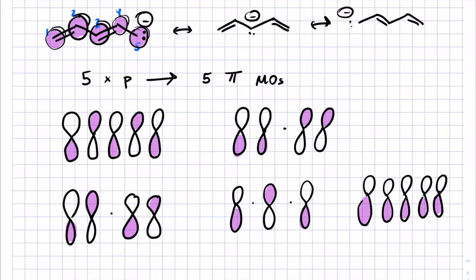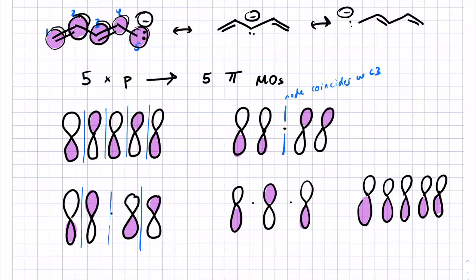What we're looking for are the vertical nodes encountered as we go from side to side. That one looks like it has four. The dots represent locations where a node coincides with one of the carbon atoms — in this case C3, where the wave function is zero. Similarly, there are also nodes in between atoms one and two and four and five. In this orbital, you've got two nodes: one coincides with C2, the other with C4. The last one doesn't have any vertical nodes. So count the nodes: zero, one, two, three.